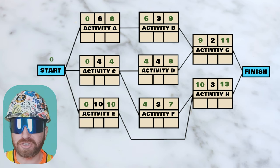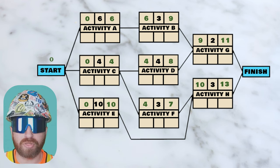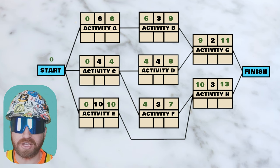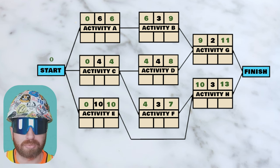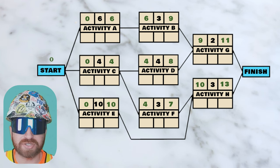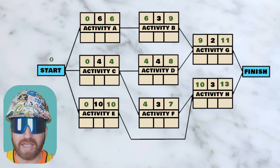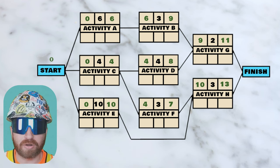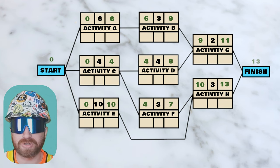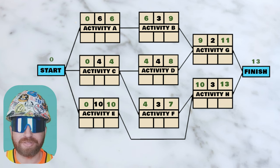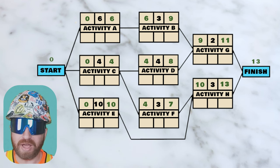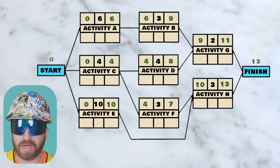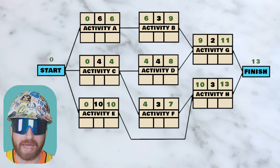We're at our finish milestone, which is dependent on both activity G and activity H being completed. Activity G can wrap up, but the project won't be complete until activity H is also completed. Since H is ending later, our finish milestone has to be associated with H on day thirteen. We've determined the length of our project by completing this forward pass, but we have not yet established our critical path — so we have to complete a backwards pass.